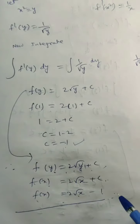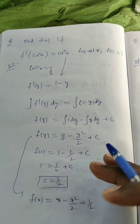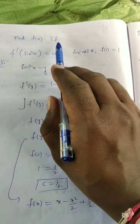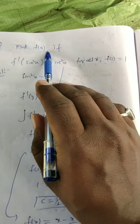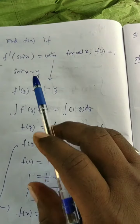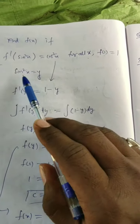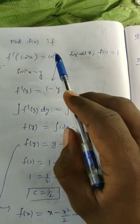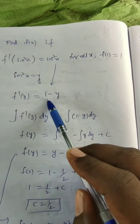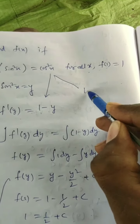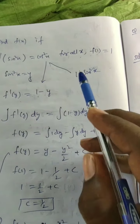Let's see two more questions of this type. Find f(x) if f′(sin²x) = cos²x for all x, and f(1) = 1. Let sin²x = y. Then cos²x = 1 − sin²x = 1 − y, so f′(y) = 1 − y.